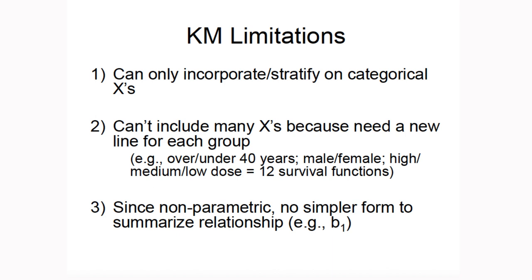But there are several limitations to using the Kaplan-Meier method. The first is that it can't incorporate numeric explanatory variables — it can only incorporate categorical x's. So we can stratify on those categories of the variable that we want to adjust for and fit survival curves for each category.